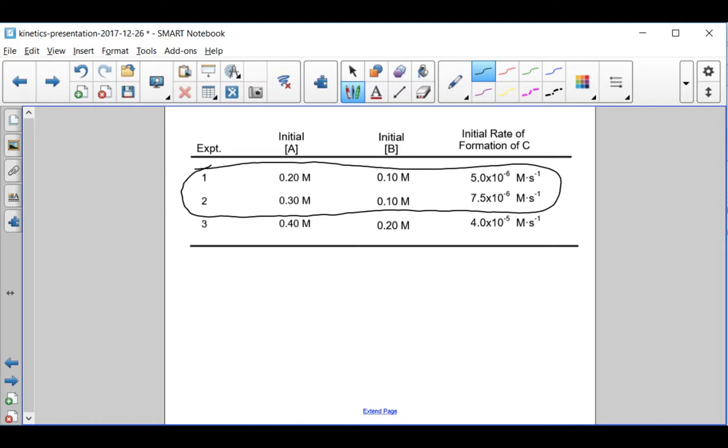Let's see. I have the concentration 0.30 over 0.20, and the rate 7.5 times 10 to the minus 6 molarity per second over 5.0 times 10 to the minus 6 molarity per second. On the left here I get 1.5.